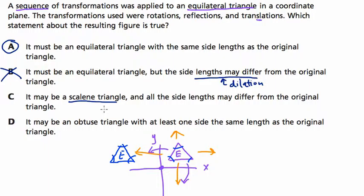It may be a scalene triangle, and all the side lengths may differ from the original triangle. Well, none of the transformations, rotations, reflections, or translations or dilations will change the shape of a triangle if we apply those transformations to all the points. And that's kind of what we're doing at this level. We are.